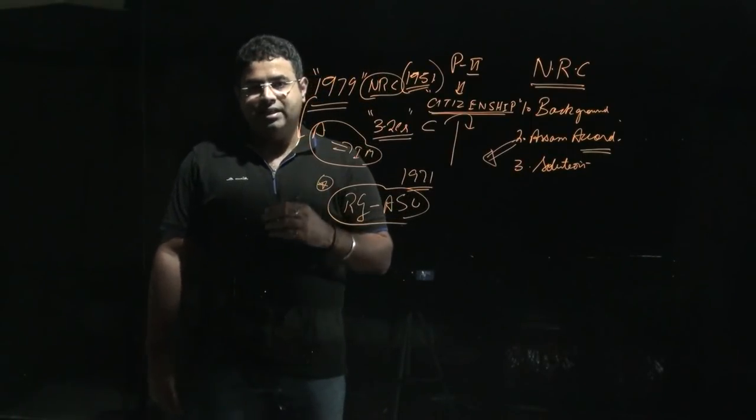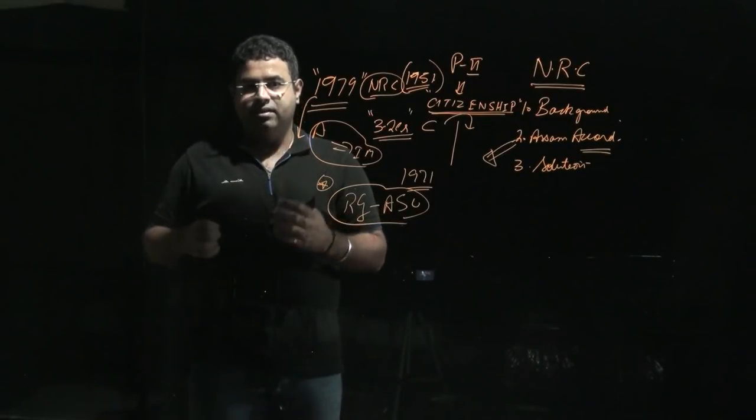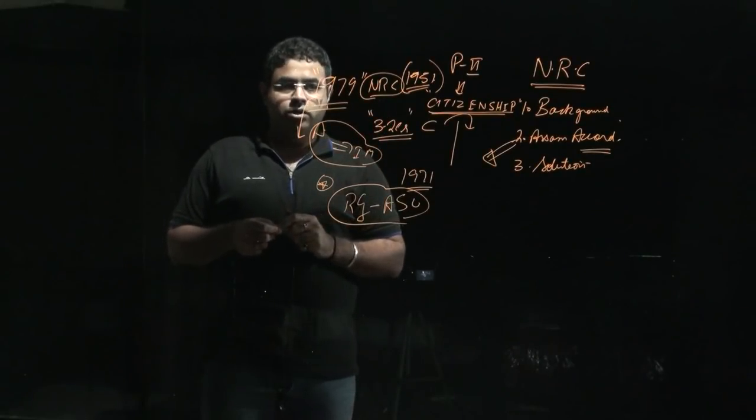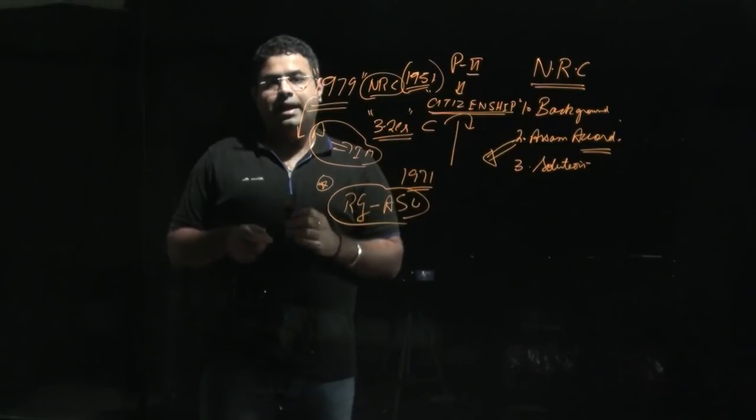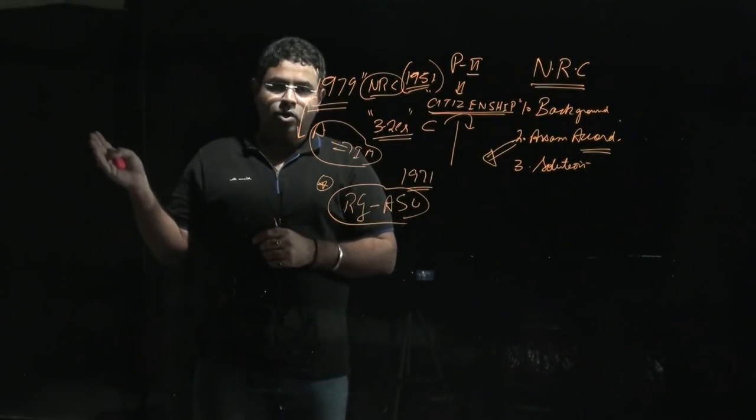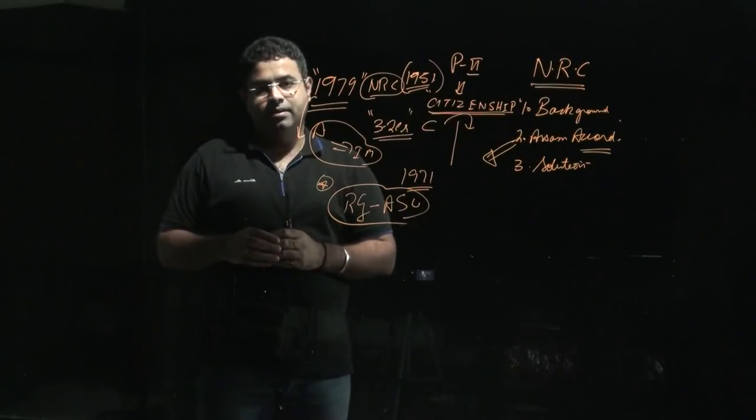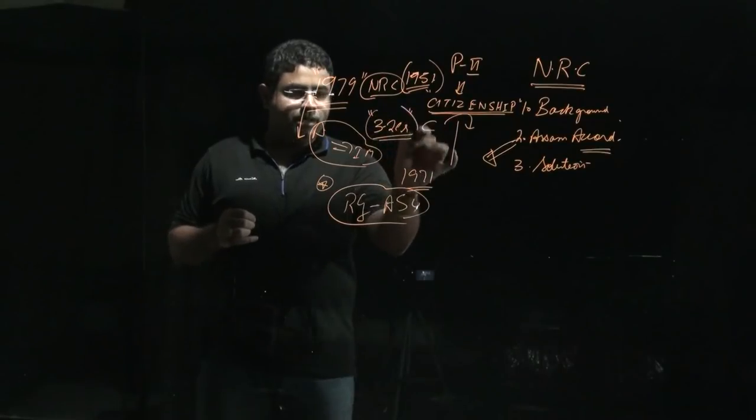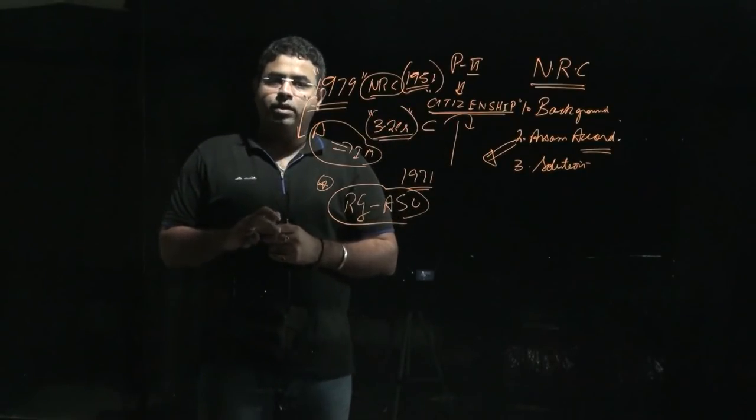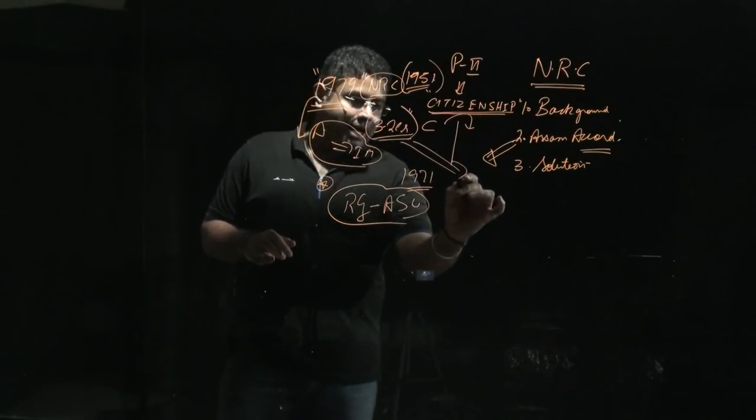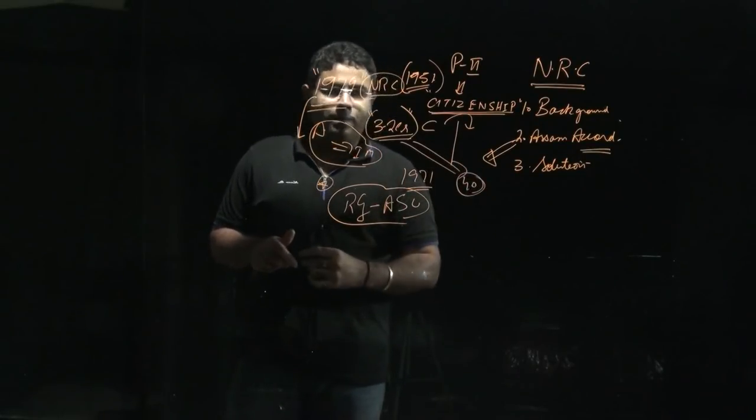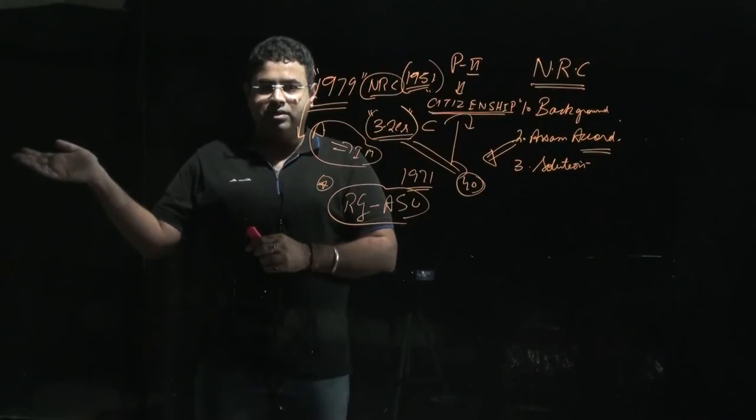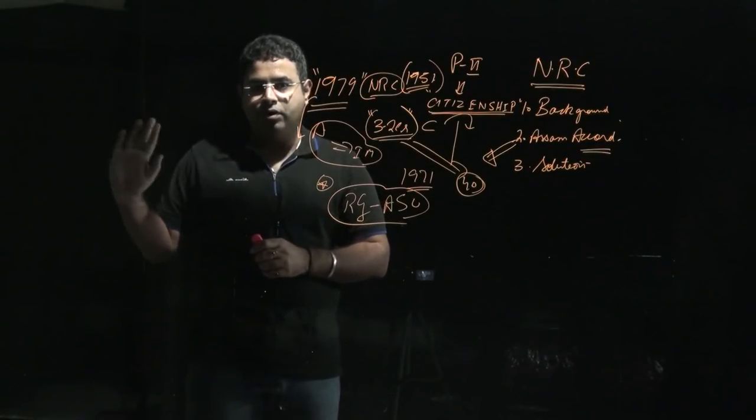It was decided that a register will be maintained with respect to citizenship - who is a citizen and who is not a citizen. In 1951, when the National Register for Citizens was created, it was updated recently. When updated recently, the present population was assessed and there are 40 lakh people who have not been able to prove their citizenship as of 24th March 1971 or after that.